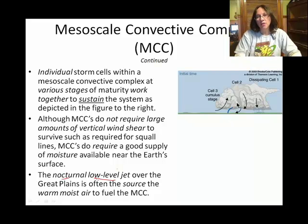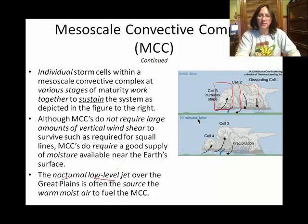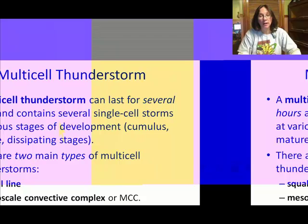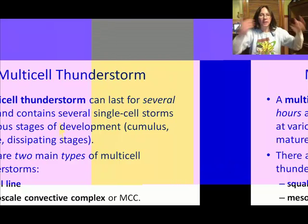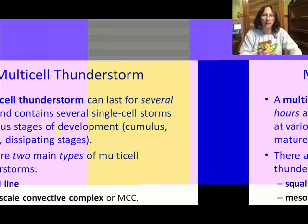This series of slides shows that one cell is dissipating, another has an updraft and a downdraft in its mature stage, and another only has an updraft — it's in its cumulus stage. Over time, you can see one stops, one dissipates, one matures, and a new cell forms. They kind of keep each other going, especially if they have fuel from that low-level jet stream — that warm, moist air.